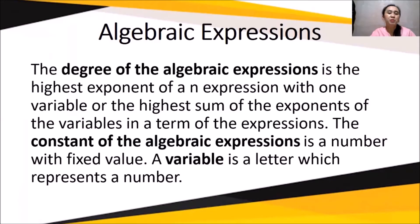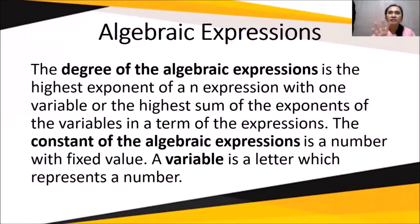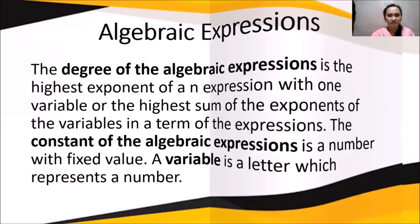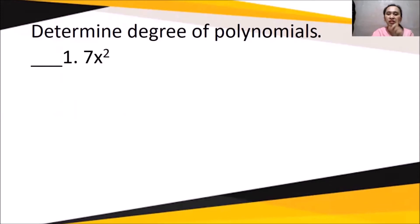The degree of an algebraic expression is the highest exponent of an expression with one variable, or the highest sum of the exponents of the variables in terms of the expression. The constant is a number with a fixed value, and a variable is a letter which represents a number. In 5x, 5 is the numerical coefficient and x is the literal coefficient. For example, 7x² has an exponent of 2, so the degree of the polynomial is 2.